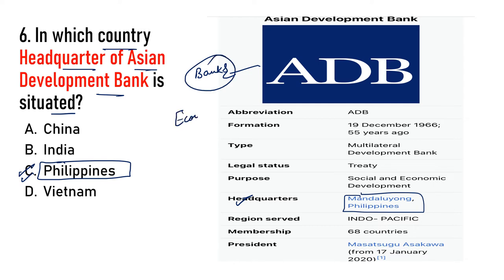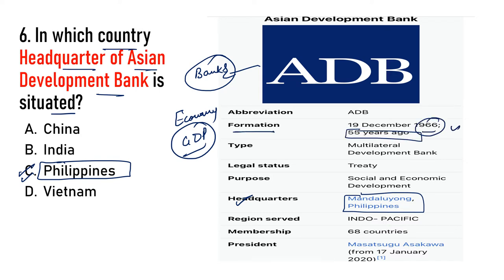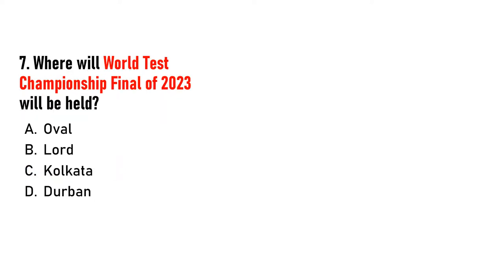ADB kaafi purana hai — lagbhag 1966 mein, yaani 55 saal pehle banaya gaya tha, treaty ke tehat. Ismein 68 member countries hain — Indo-Pacific yaani Indian Ocean aur Pacific Ocean ke desh. President ka naam yaad kar lijiye: Masato Asakawa, jo 2020 se hain.